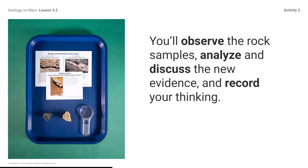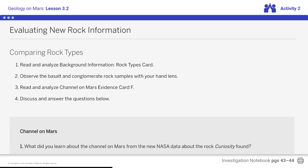Examine the following materials in the Materials folder for this lesson: basalt rock sample photos, conglomerate rock samples, Channel on Mars evidence card F, and background information rock types card. You will continue to use evidence card F and the background information rock types card for the remainder of the lesson.